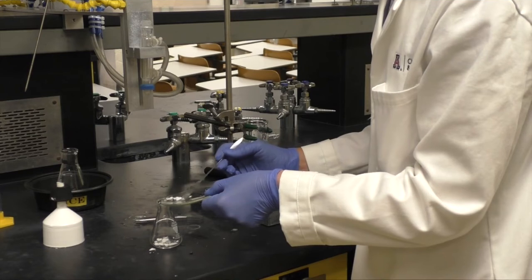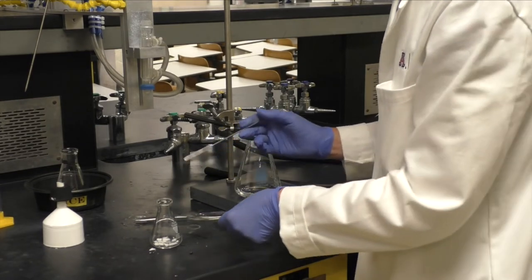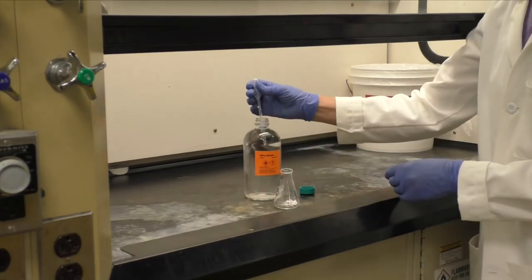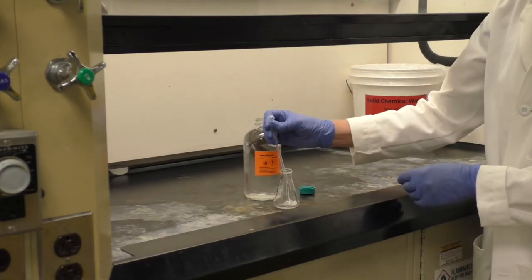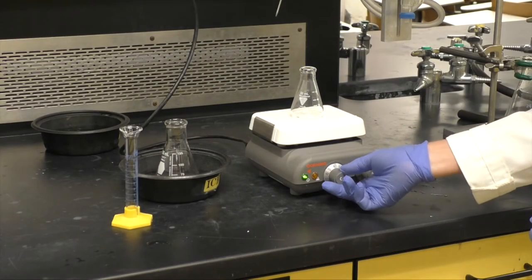To purify the product, transfer the crystals to a clean, dry 50 milliliter Erlenmeyer flask. Add 1 milliliter of 100% ethanol and warm the flask until all the solid dissolves.